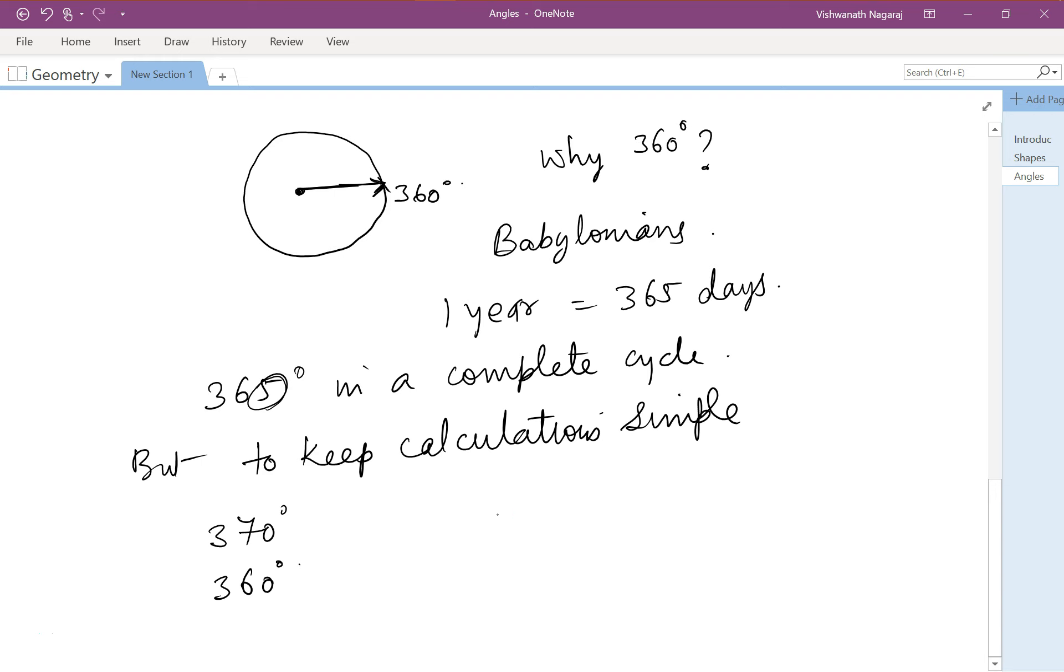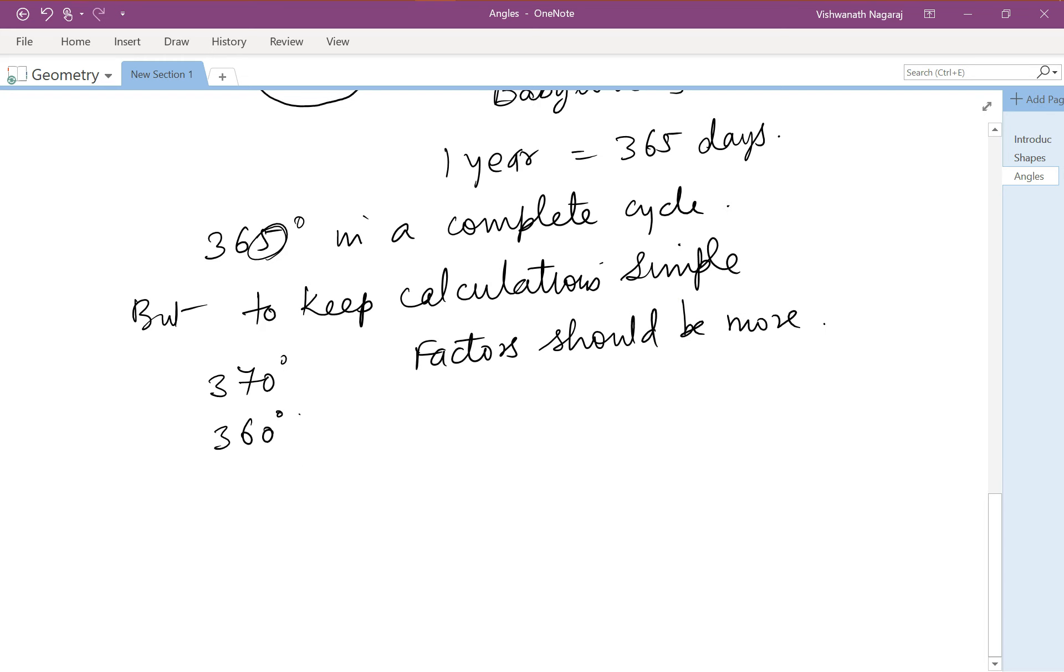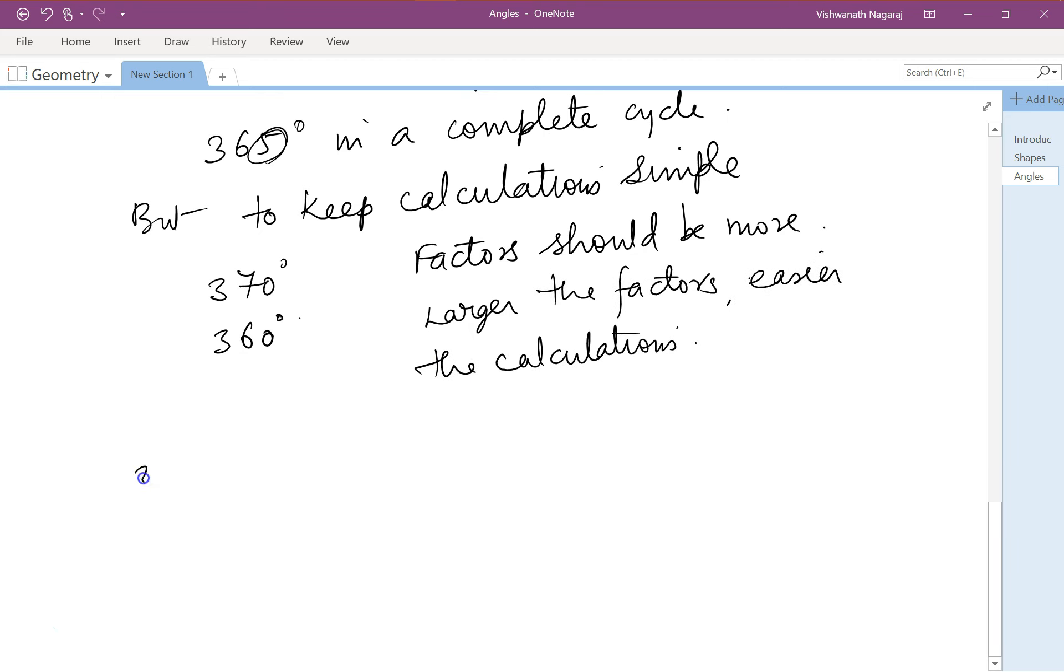Now, again remember, the idea is to keep the calculations simple. More the number of numbers with which 370 can be divided, or 360 can be divided, the better it is. Or in other words, factors should be more. Larger the factors, easier the calculations. So let's look at the factors of 370. So factors are 1, 2, 5, 10, 370, that is 37 times 10, 74, 185, and 370.